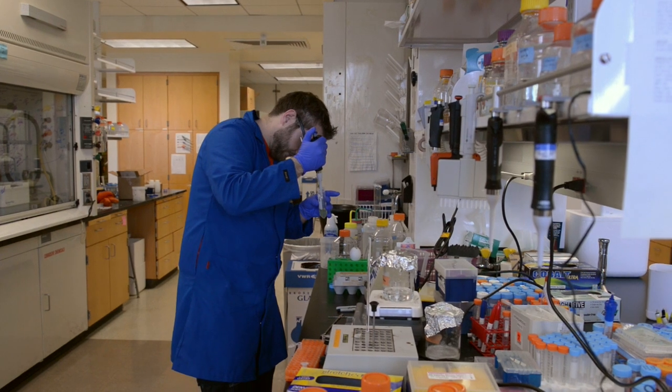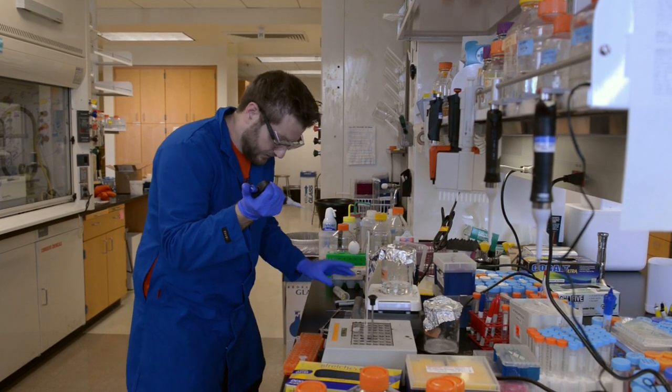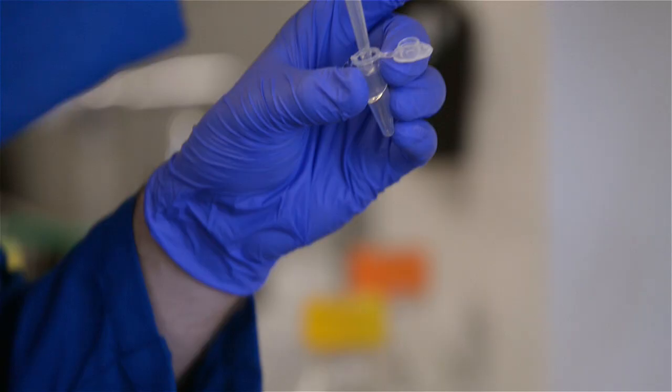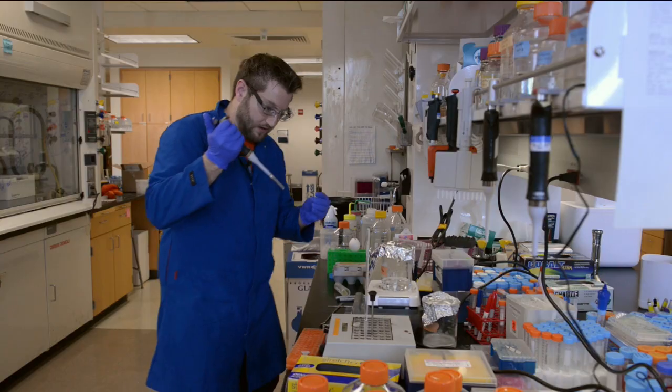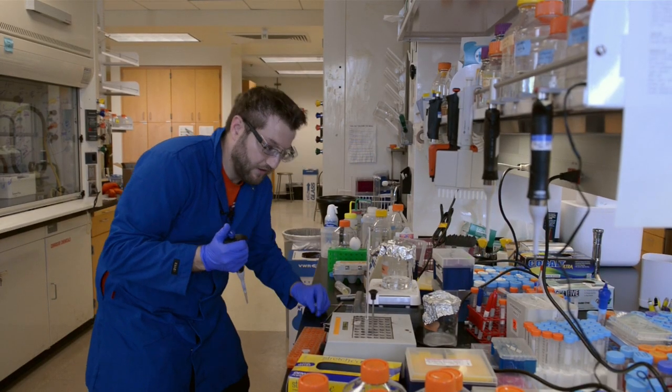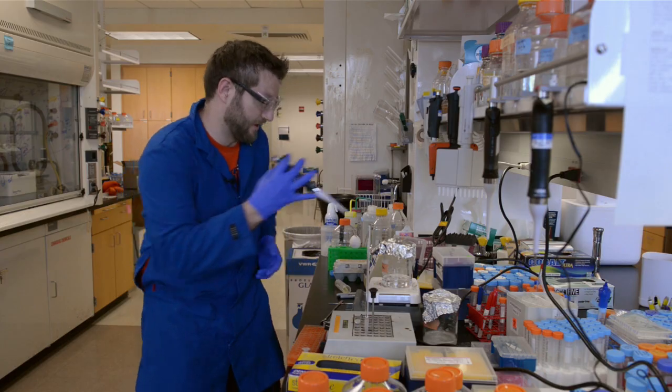So we're going to take a little bit of it, put it in a tube, and then boil it at about 90 degrees Celsius for about 20 minutes.